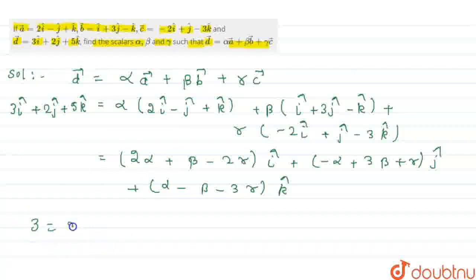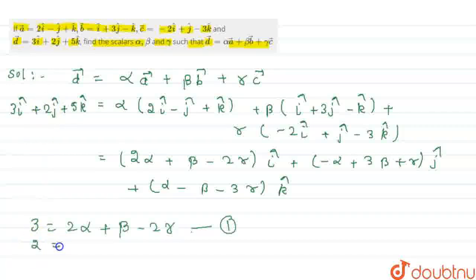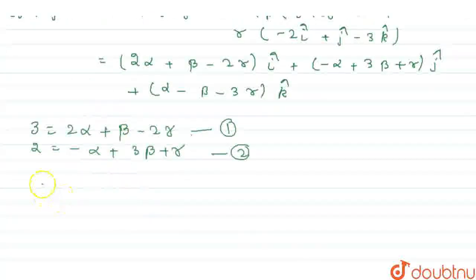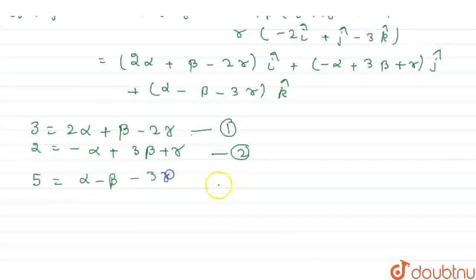Comparing left-hand side and right-hand side coefficients: the i-cap coefficient gives equation 1: 3 = 2alpha + beta minus 2gamma. The j-cap coefficient gives equation 2: 2 = minus alpha + 3beta + gamma. The k-cap coefficient gives equation 3: 5 = alpha minus beta minus 3gamma.